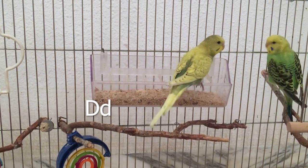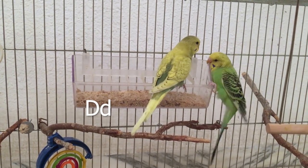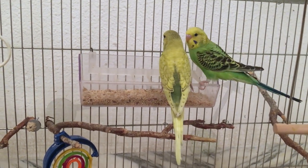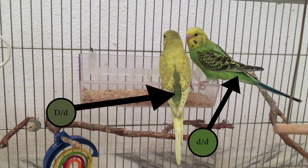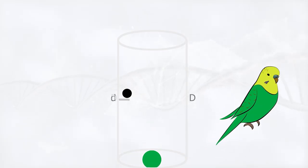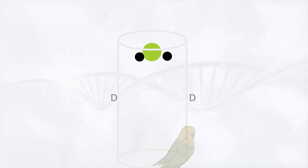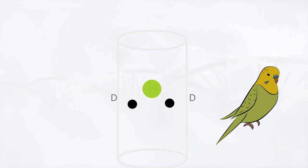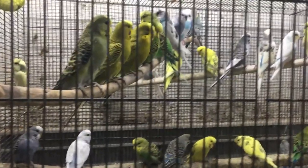Here you can see the difference between a light green and a dark green budgie. And finally, if your budgie has double dark factor, it will become olive — it is such a dark green that we call it olive.